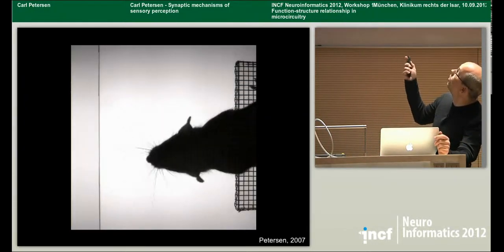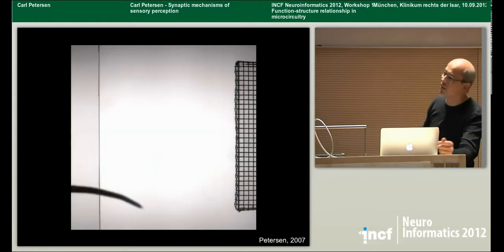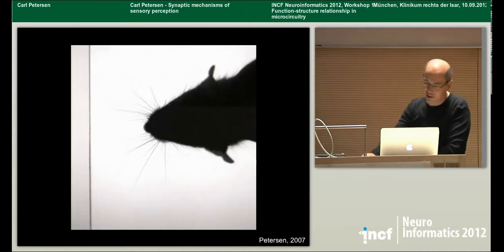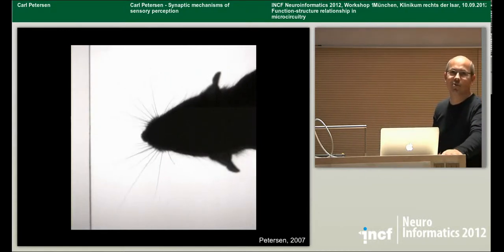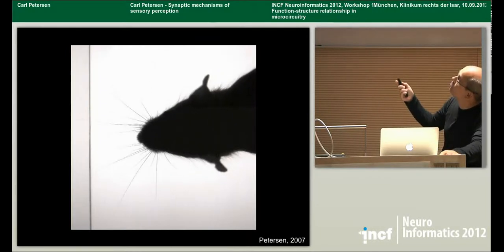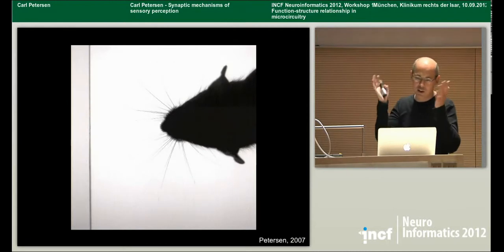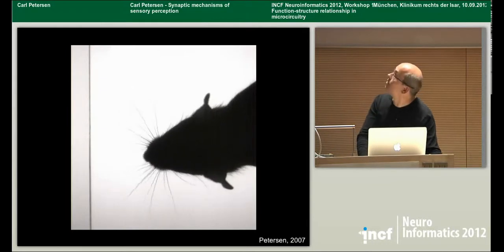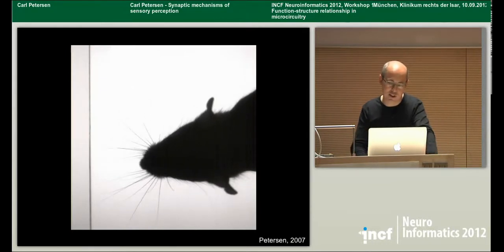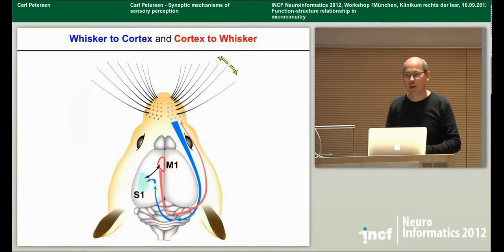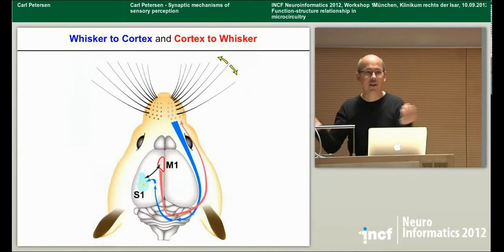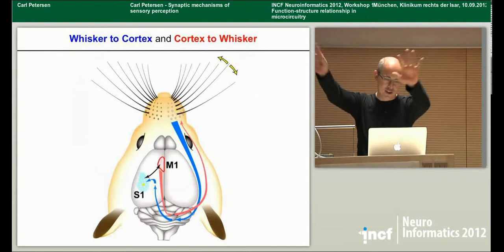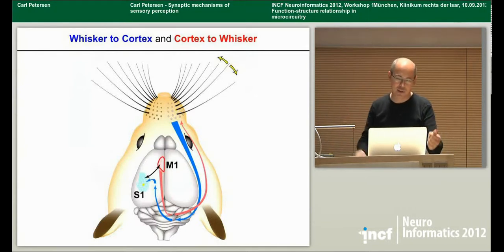Here the mouse is on the initial platform, reaching across to the target platform — it touches, touches, touches, eventually builds up confidence and then makes the decision to jump. You can see this is really a very active process: it's got its whiskers moving, palpating the target platform, gradually building up confidence about where the target is. It's very clear we have sensory-motor interaction — much like if you were walking in a dark room, waving your arms around, detecting objects through that active process.